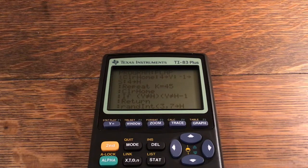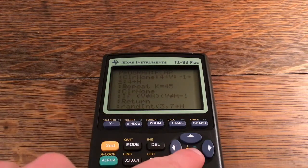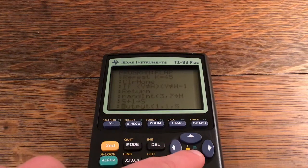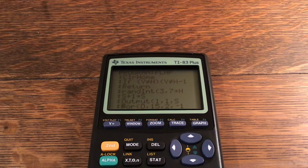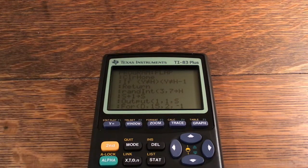randInt(3,7)→H and S+1→S. Output(1,1,S). And you might be wondering why if I check that Y is not equal to H and Y is not equal to H-1, don't I also have to check—because I might be way up here and the pipe might be all the way at the bottom, but the pipe hasn't reached me yet. And that is a very good point.